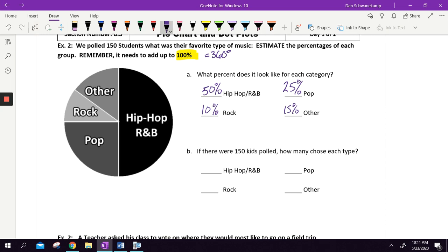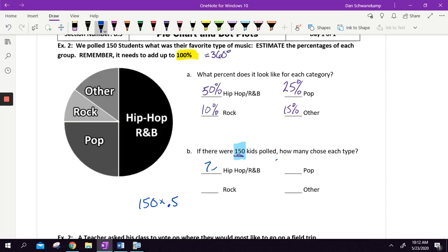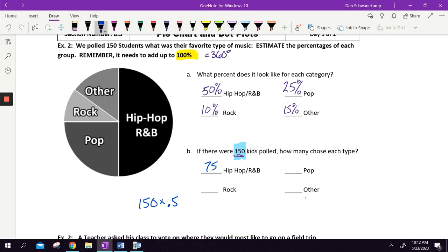If there were 150 kids polled, how much would choose each type? We are going to use these percentages to figure out the number. Well, if I've got 150, I would take 150 times 0.5 because 50% I would want to write as a decimal. That is 75 people would have chosen hip-hop and R&B. If I'm doing pop, we're going to go 150 times 0.25 because we're doing 25%, which is 37.5 people. We can't have half a vote unless somebody voted for two, but we're going to stay with that number for this estimate because we are estimating the percentages. If you look at that pop, maybe it's a little bit less than 37.5 because it's not quite a 90 degree angle.